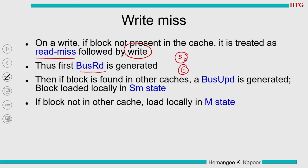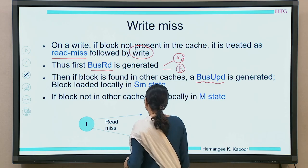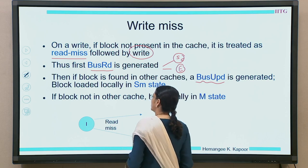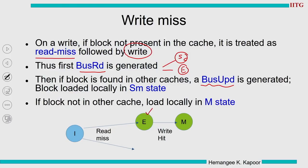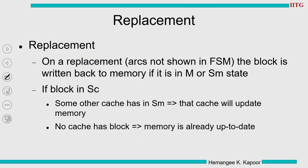From the hypothetical invalid state we want to write: generate a read miss first. If no other sharers, become E then move to M via write-hit actions. If sharers exist, become SC then execute write-hit actions and move to SM. Write miss = read miss followed by a write hit. On block replacement: not shown as FSM arcs, but when a block is evicted in M or SM, update memory.